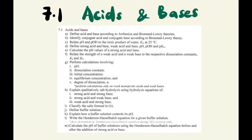At the end of this video you should be able to: define acid and base according to Arrhenius and Bronsted-Lowry theories; identify conjugate acid and conjugate base according to the Bronsted-Lowry theory; relate pH and pOH to the ionic product of water Kw; define strong acid, strong base, weak acid, weak base, pH and pOH; and calculate the pH value for strong acid and strong base. Again, this is Part 1.